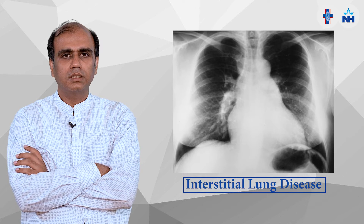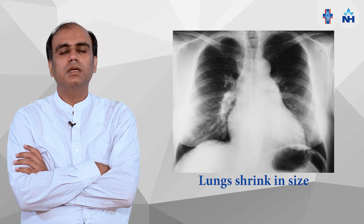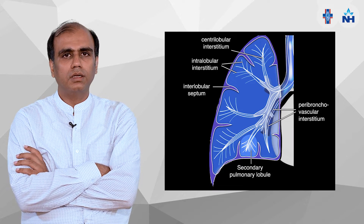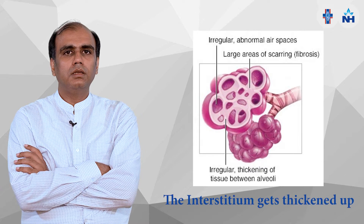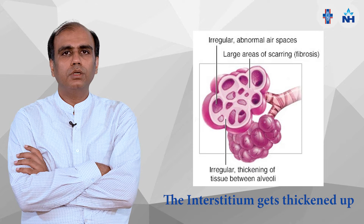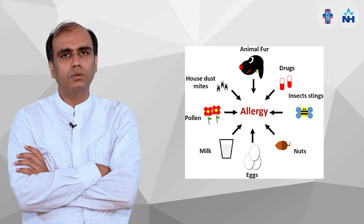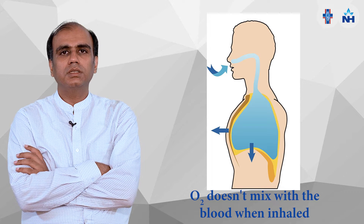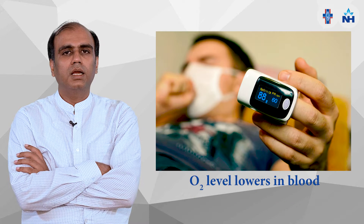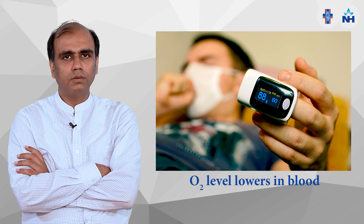Dear friends, today we will talk about ILD — interstitial lung disease. This is a disease in which the lungs are going to be shrunken. There is a very important structure in the lungs called the interstitium. In this disease, the interstitium is going to be thickened by any cause — due to occupation, due to any allergic agent, or due to any drug. That is why when we inhale oxygen, the oxygen is not going to pass into the blood, the oxygen level lowers down, and the patient becomes dyspneic. This is basically ILD.